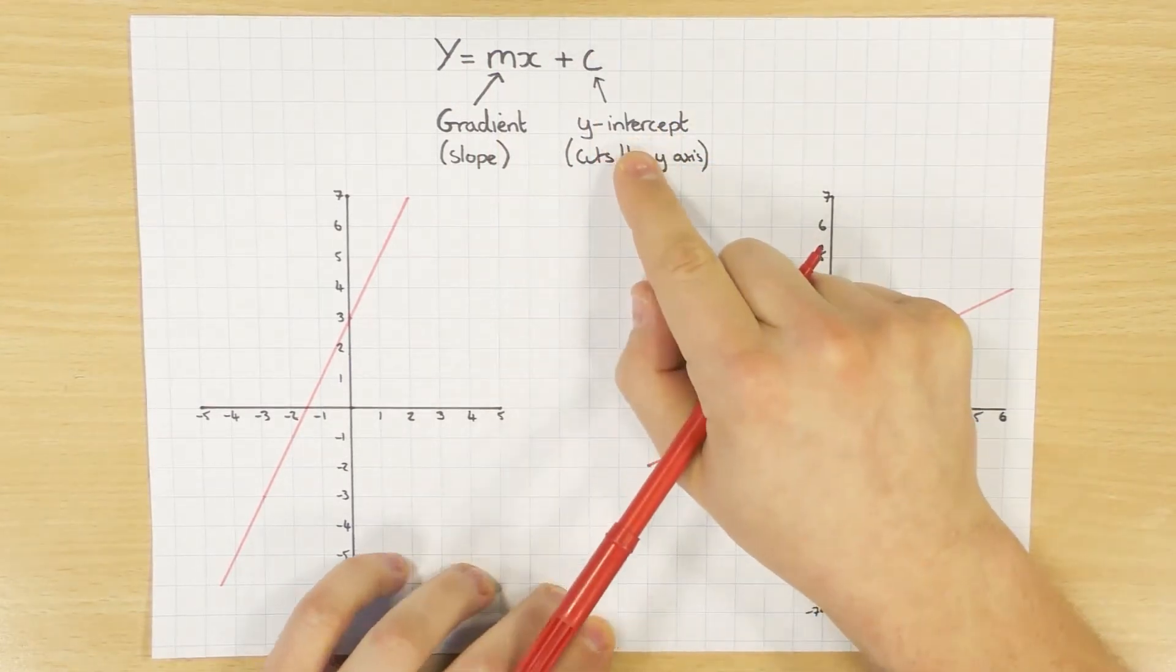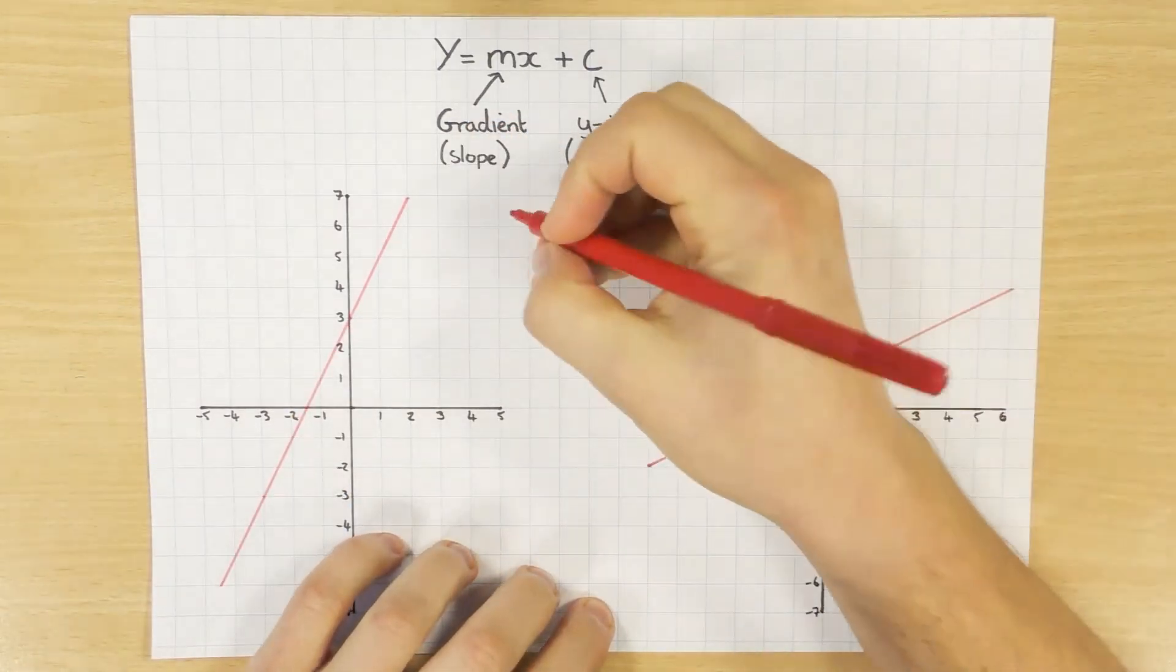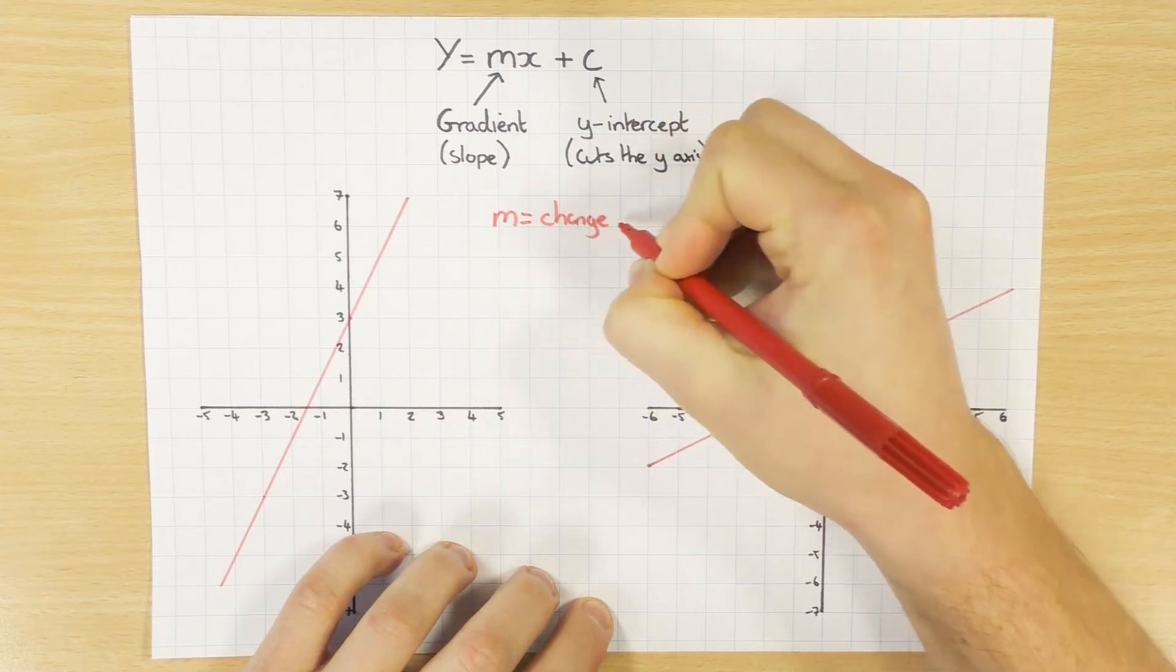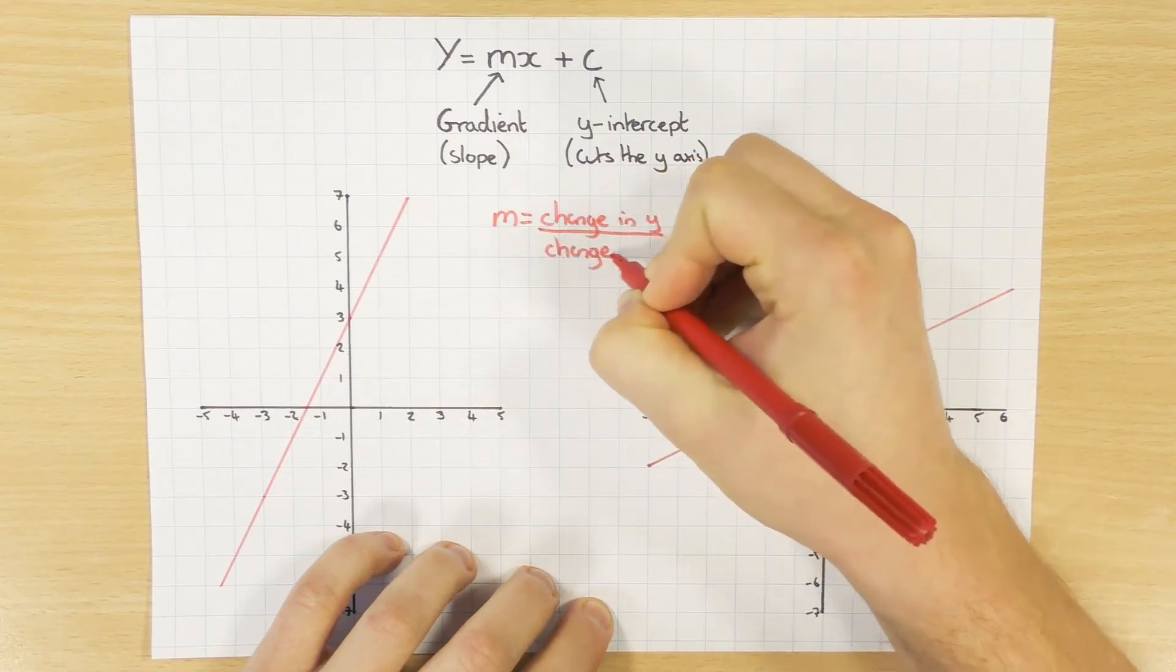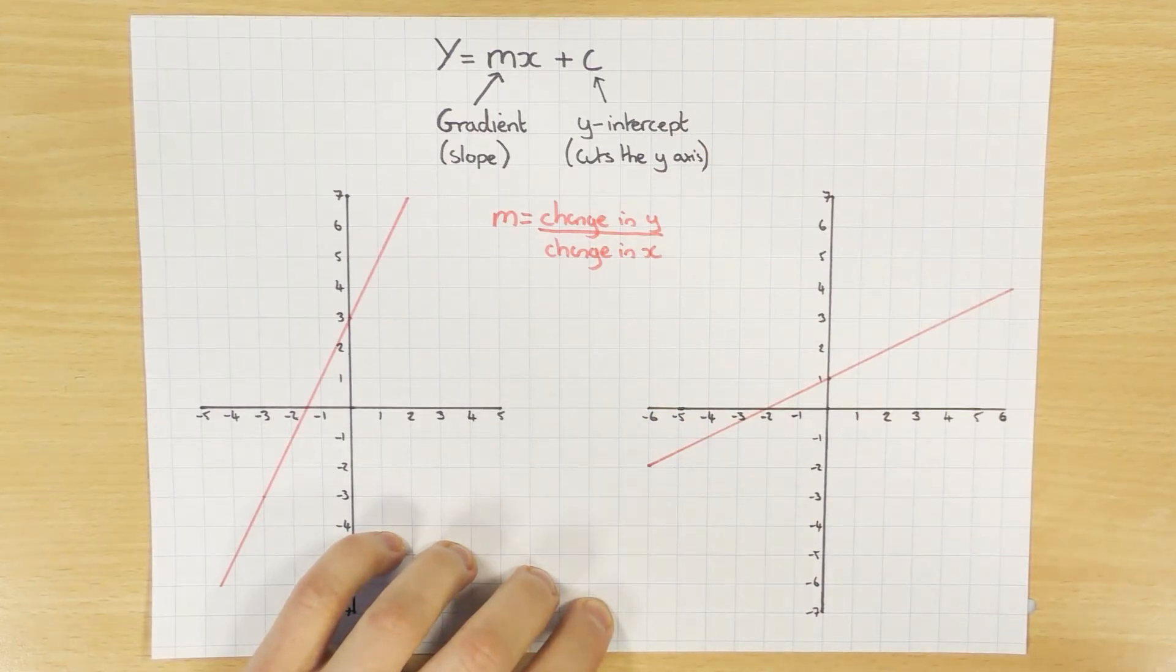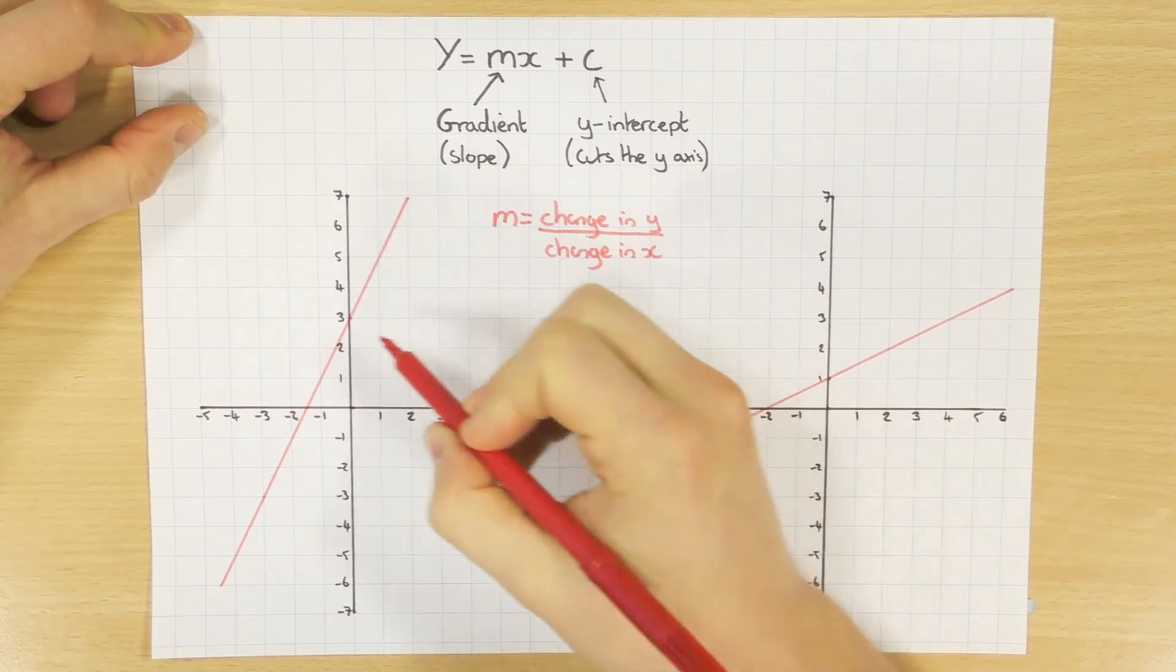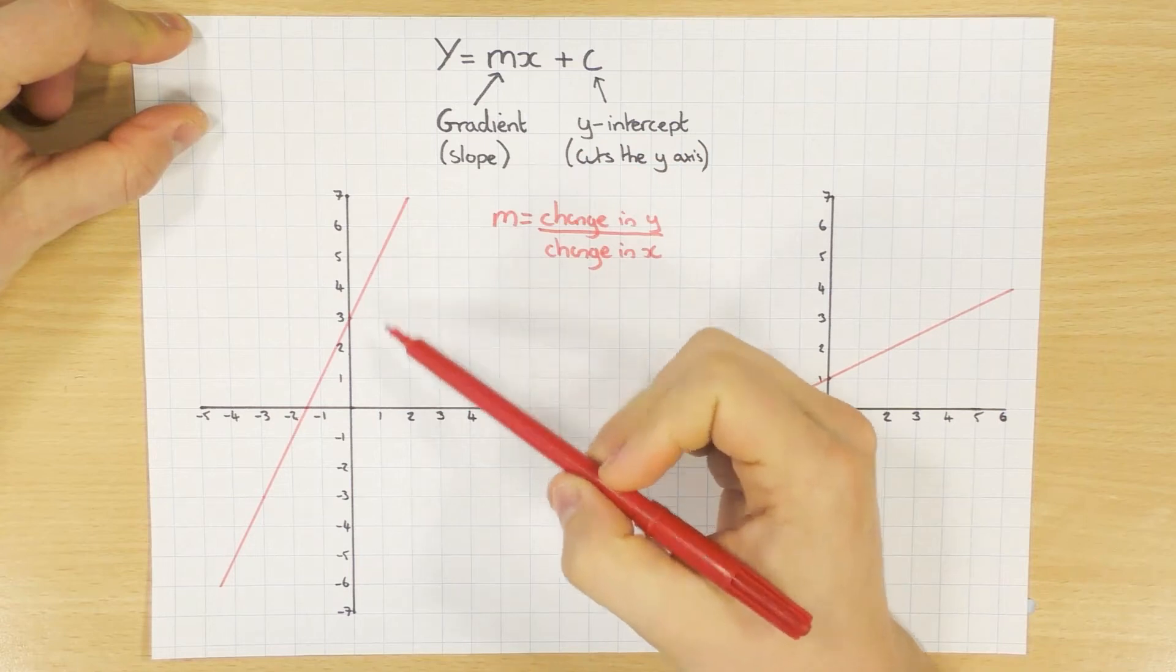So obviously, where it crosses the y-axis is nice and easy. In this case, it's 3. However, the gradient, that's a little bit trickier. And to work out the gradient, you need to know this. To work out the gradient, it is the change in y divided by the change in x. So that will become a lot clearer in a minute when I do this example here. I'm going to work out the equation of this line. So I'm going to work out the gradient first. Now to do that, you pick two coordinates that are on the line. And when I say coordinates, I mean something like this. So I've got 1, 5, that's a coordinate.